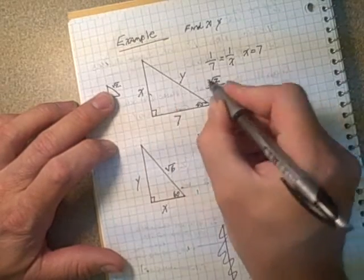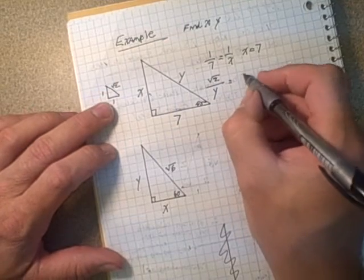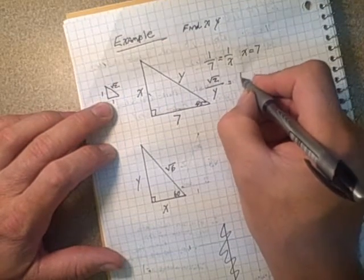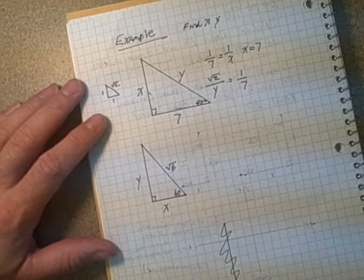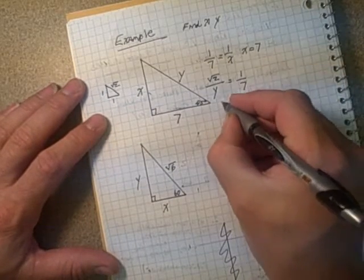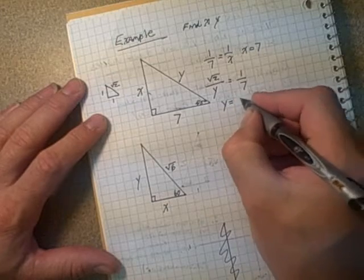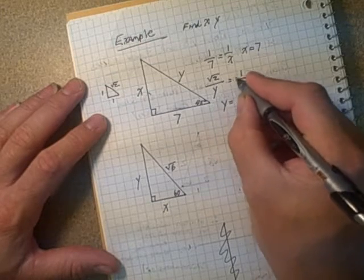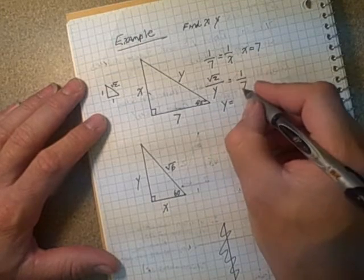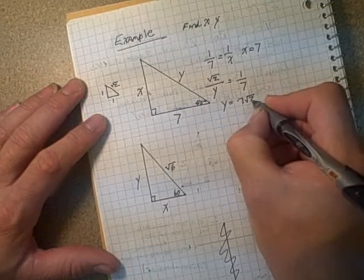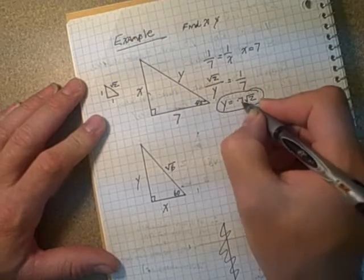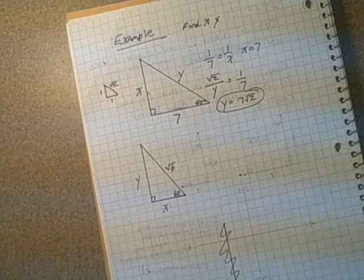Let's do the ratio for the y now, which is here. So let's go root 2 is to y. Okay, root 2 is to y is the same as 1 is to 7. So we have to do a little cross-multiplication to get that one. So y is equal to, y times 1 is equal to root 2 times 7, or 7 root 2, if you like. So fairly simple to do that one.